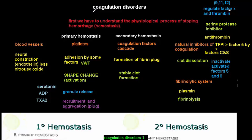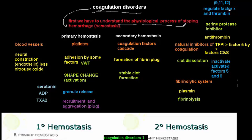In this video I'm going to talk about coagulation disorders. To understand the pathology of coagulation, you first have to understand the physiological coagulation. Every one of us has a physiological process of coagulation when we bleed. To understand the pathology, you have to understand the physiological process of stopping hemorrhage — the hemostasis process.